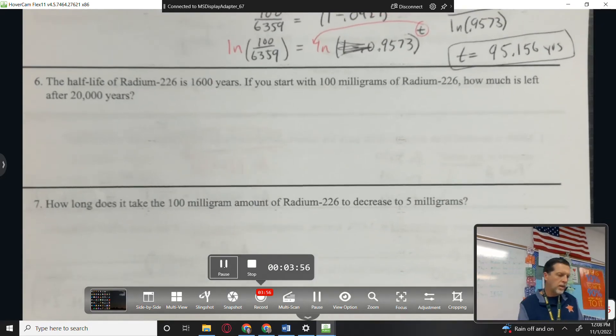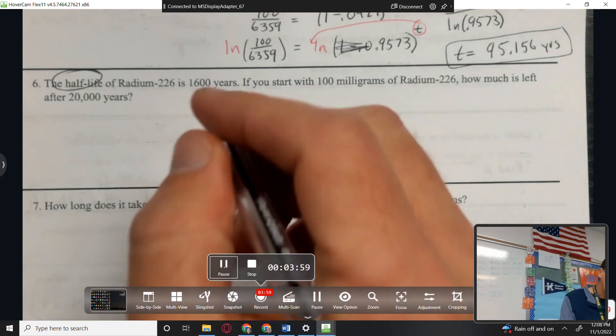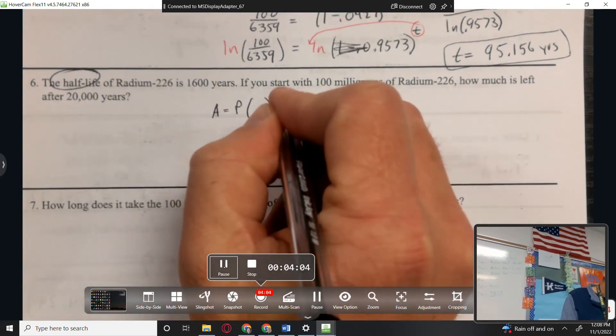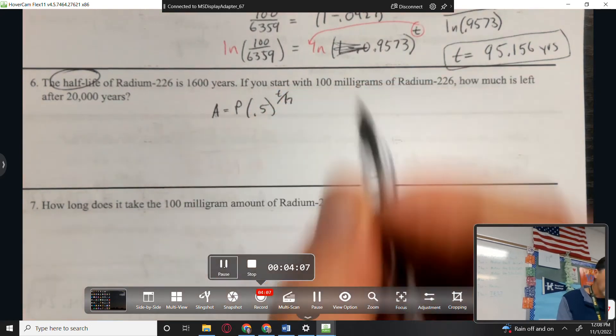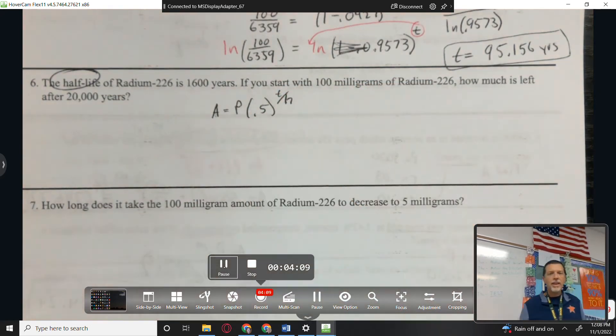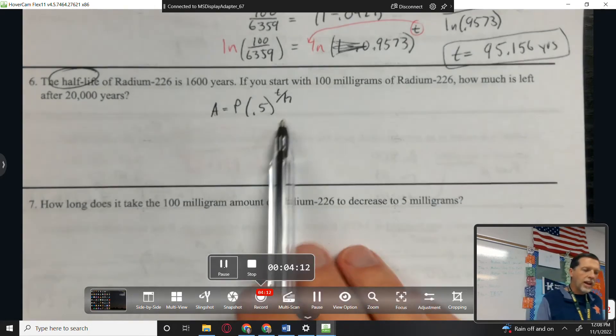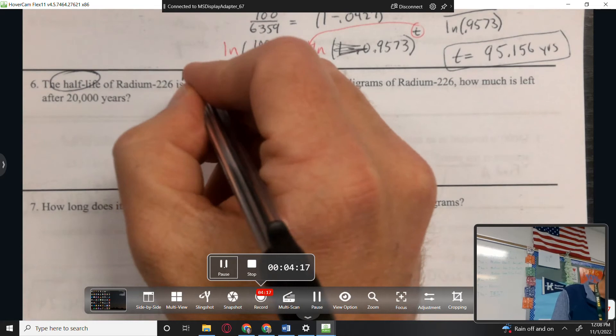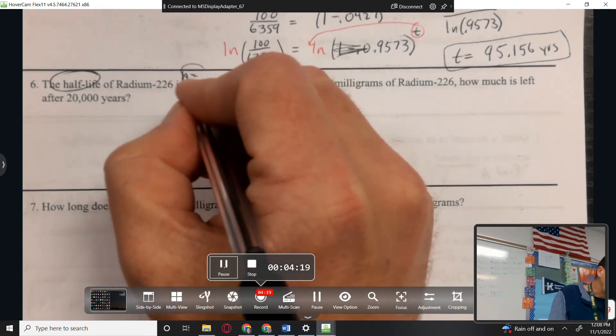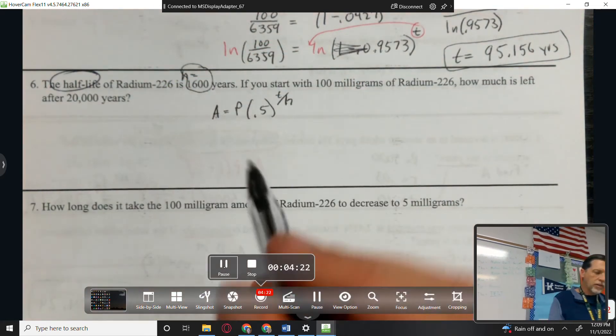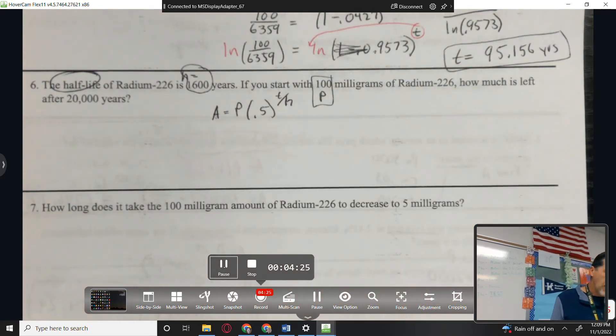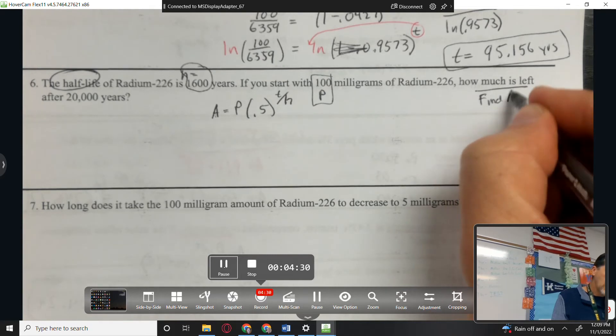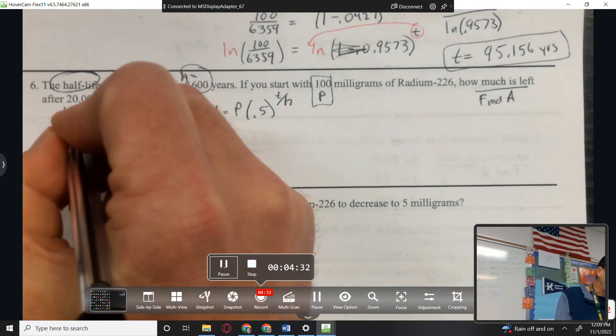The half-life of radium. So already I know which formula I'm using. The half-life formula. After equals pre 0.5 to the T over H. T is time, like the time run of the experiment. H is the half-life number. So the half-life is 1600. That tells me that H is 1600. If I start with, so if I pre 100, how much is left, find A, after T, 20,000 years.